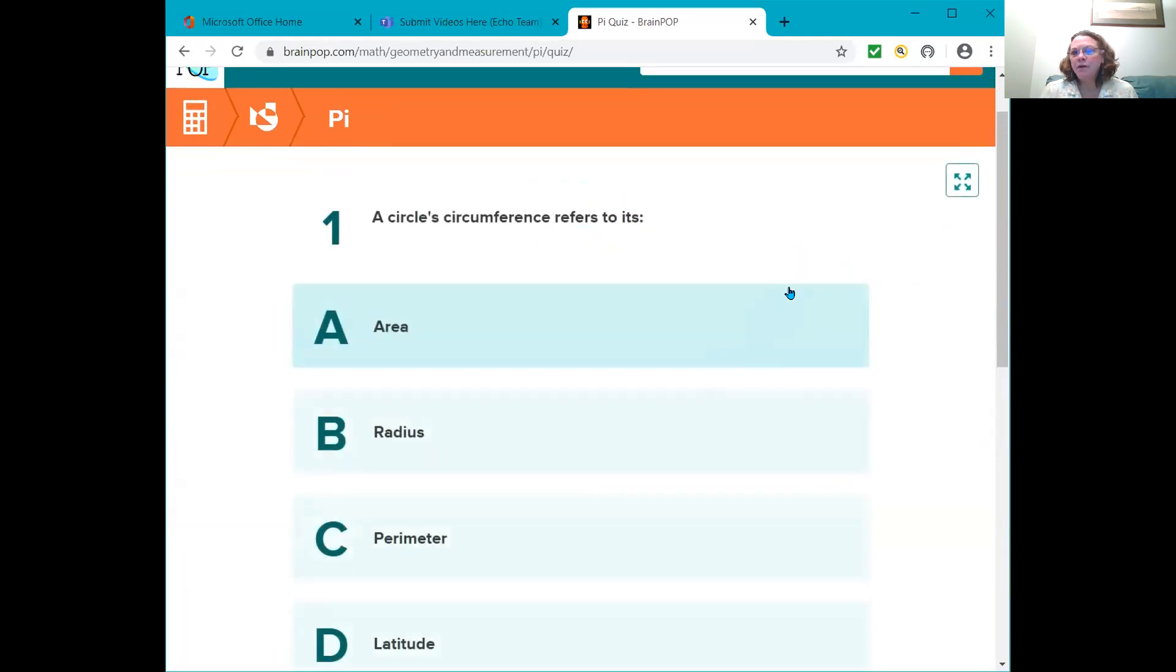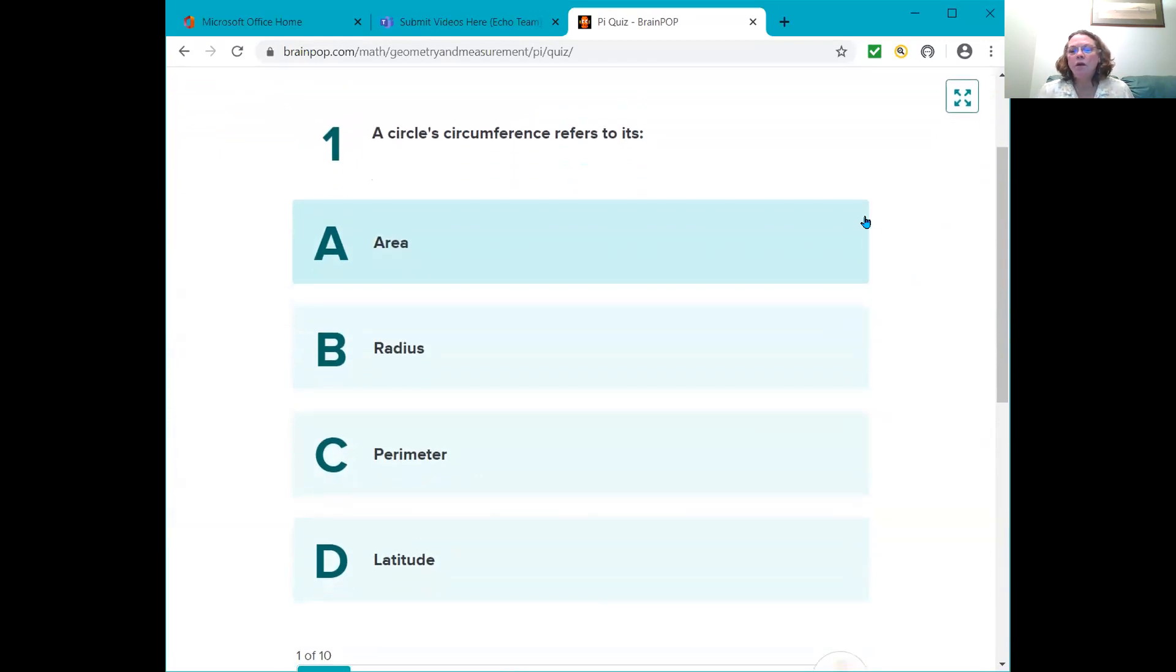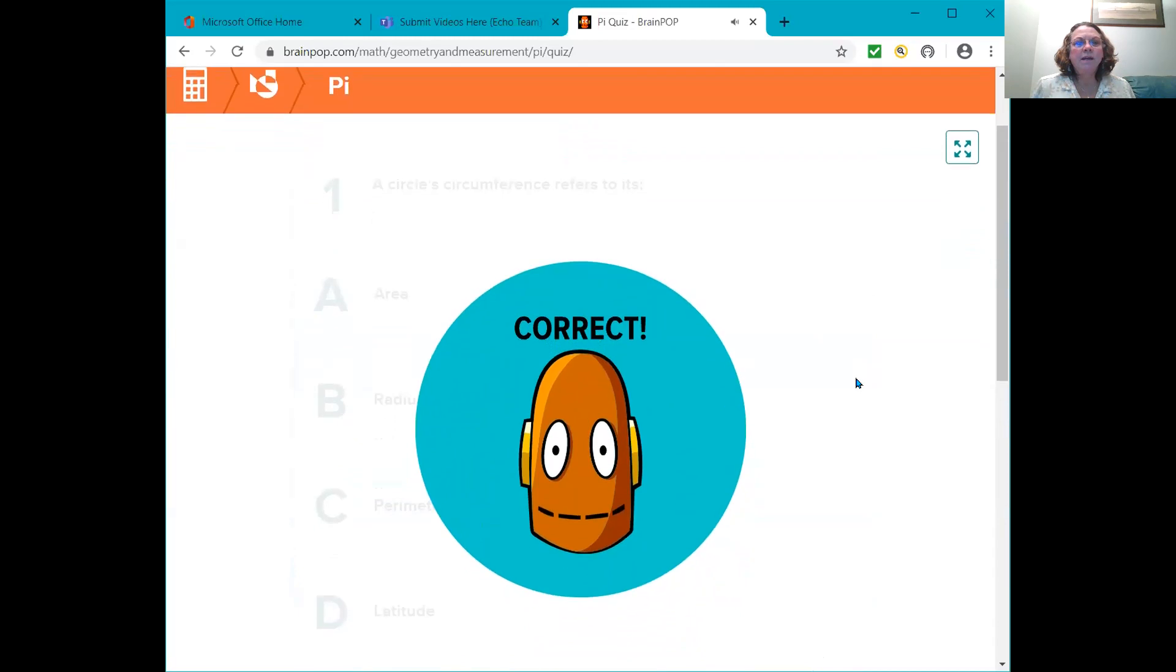Let's review the quiz see how much we retain from that. You can write these answers down on your notepaper if you want. You won't we won't be turning this in but I hope that you'll give it your best shot. So write down the answer if you get it wrong cross it out and write the right answer. Okay. Question one. A circle's circumference refers to its A area, B radius, C perimeter, or D latitude. Do you remember what he said about the circumference? It's the outside of it, the perimeter. C is the correct answer.